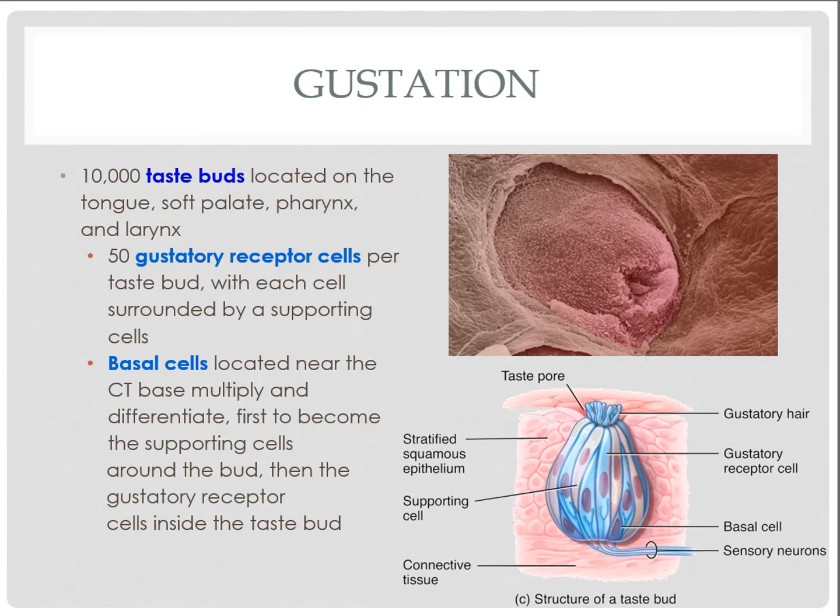Looking at how gustation works, we see the presence of taste buds on the tongue, soft palate, pharynx, and larynx, most concentrated within the tongue itself. Compared to the olfactory system's 10 to 100 million sensory receptors, we have about 10,000 taste buds with about 50 gustatory receptor cells each — so technically about 500,000 receptors responsible for the sense of taste. Clearly, olfactory reception is much stronger than gustatory.